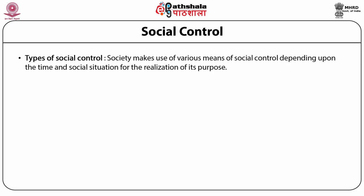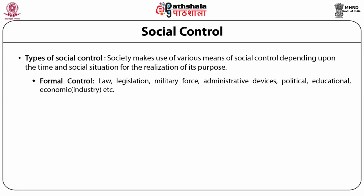Social Control: Society makes use of various means of social control, depending upon the time and social situation for the realization of its purpose. Formal control includes law, legislation, military force, administrative devices, political, educational, economic institutions, etc. State systems possess a monopoly on the use of force. Through systems of codified law, the state both forbids individuals from using force and determines how it will use force to require certain behavior from citizens. When legal prescriptions are violated, the state has authority to fine, imprison, or even execute the wrongdoer.